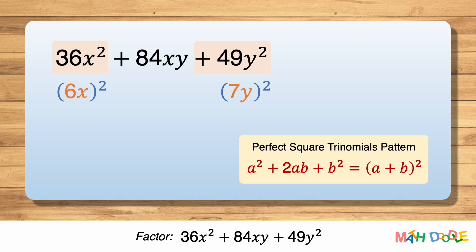In the pattern, a is 6x and b is 7y. Now let's check if 2ab is equal to the middle term of the expression. We can substitute 6x for a and 7y for b. 2 times 6x times 7y is 84xy.